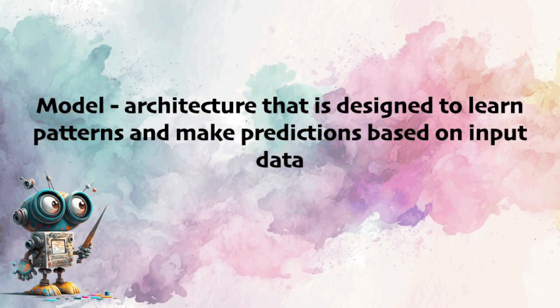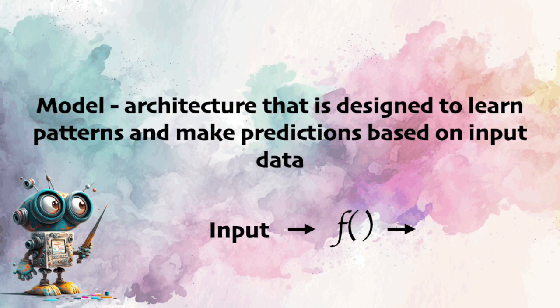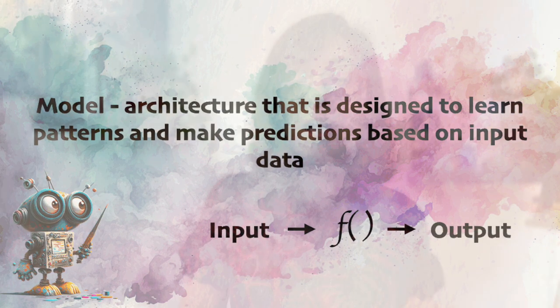In case you are confused about the relation between model and dataset: a model is some kind of algorithmic representation or architecture that is designed to learn patterns and make predictions based on input data. It can be thought of as a mathematical function that takes in inputs and produces outputs. The model captures the underlying relationships in the data and generalizes that knowledge to make predictions on new data it has never seen before.